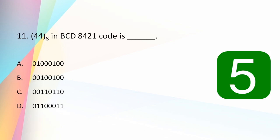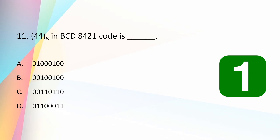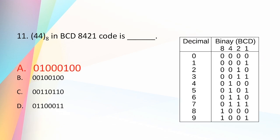44 base 8 in BCD 8421 code: The answer is 01000100. We represent each octal digit using 8421 code. For 4 you have 0100, and since both digits are 4, it repeats: 01000100. So the answer is option A.